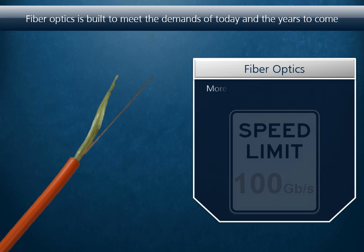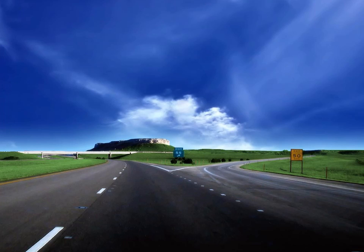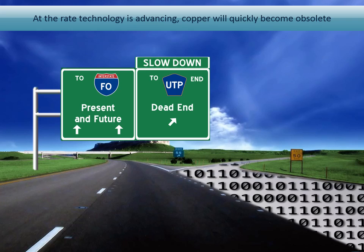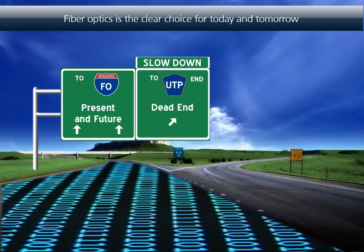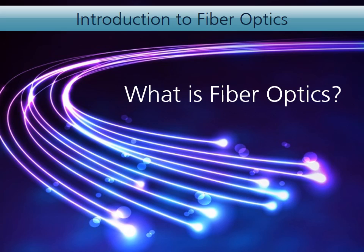Fiber optics is a rival network cabling solution that is challenging copper to become the standard. Fiber easily meets the speed and bandwidth demands of today and the foreseeable future. We are at a crossroads. Copper is struggling to meet the demands of today and will need upgrades for tomorrow. At the rate technology is advancing, copper UTP will quickly become obsolete. Fiber optics is the clear choice for today and tomorrow for both the consumer and the integrator. With the transition to fiber all but inevitable, let's explore this technology further to stay ahead of the curve.